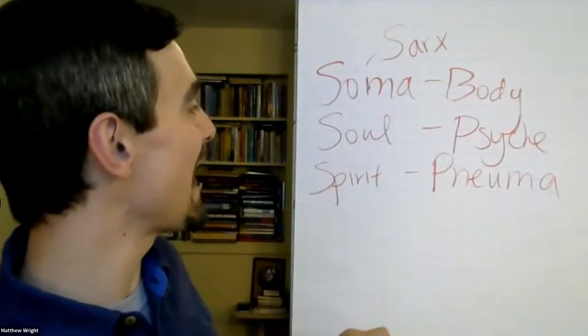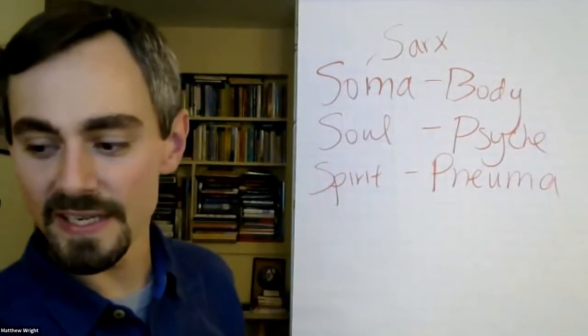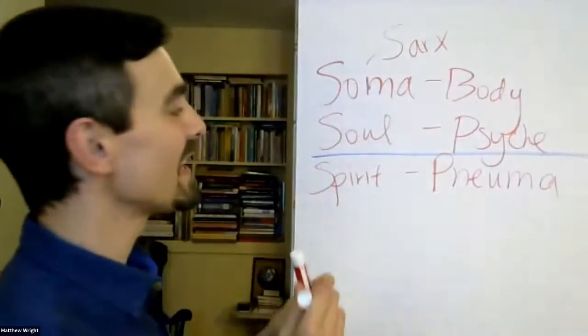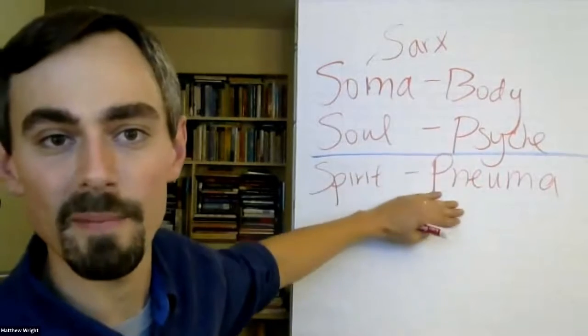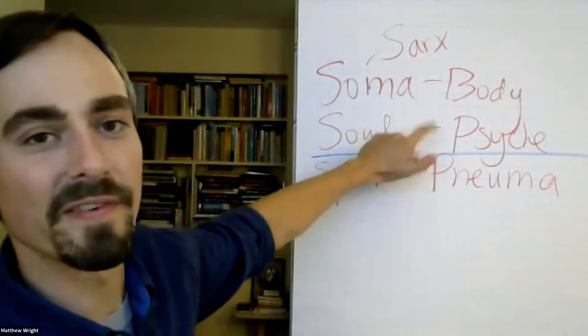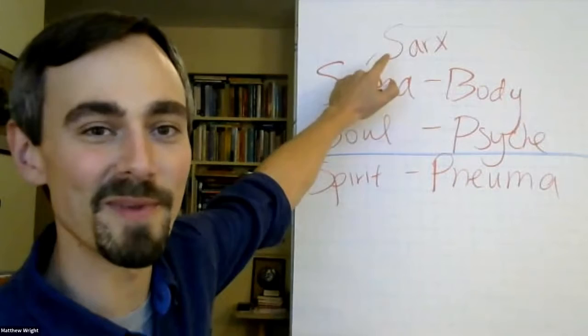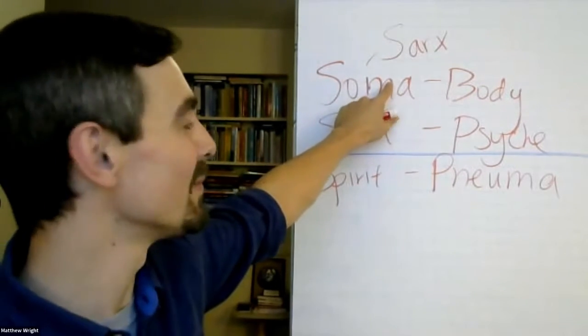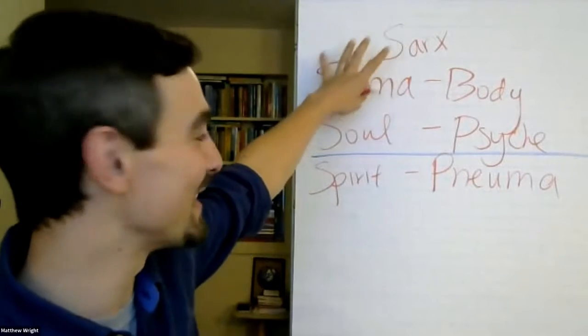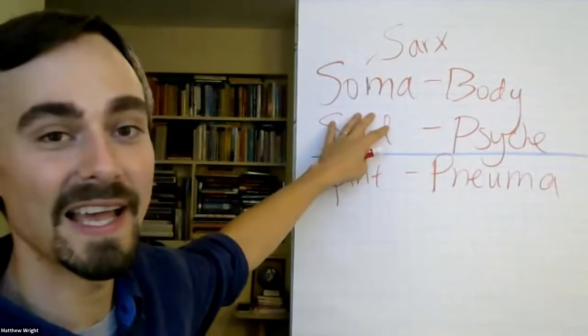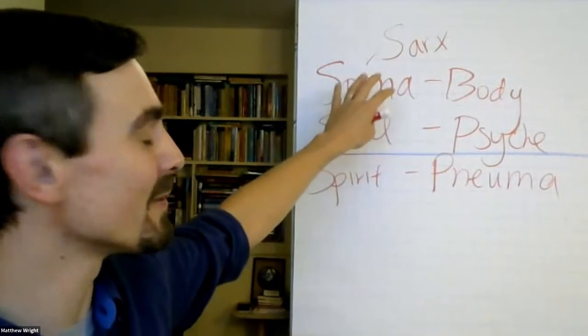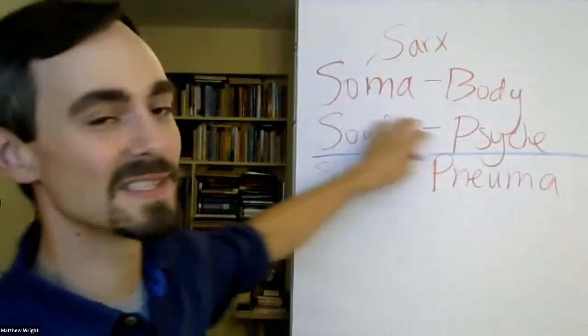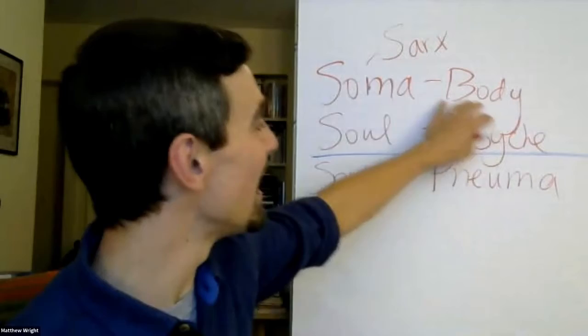And what tends to happen is, especially in contemporary culture, we've drawn a line here. We've cut ourselves off to the depth dimension of our being. Some of us are obsessed with soma. We're at the gym all the time working on our bodies and really identified with our physical self, which is not bad, but we can become over-identified with that. Or we go to therapy once a week, we're doing our psychological work, and we're really fused with the sense of our psychological self, our psyche.